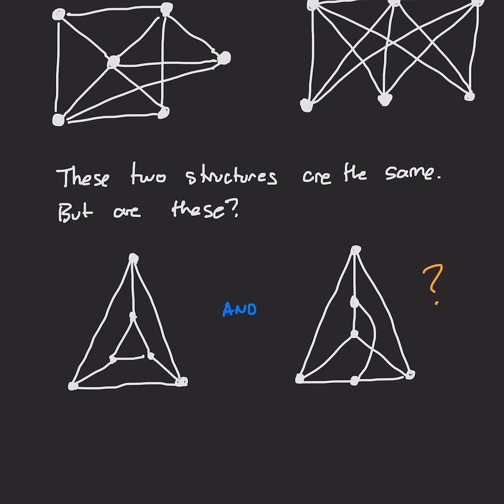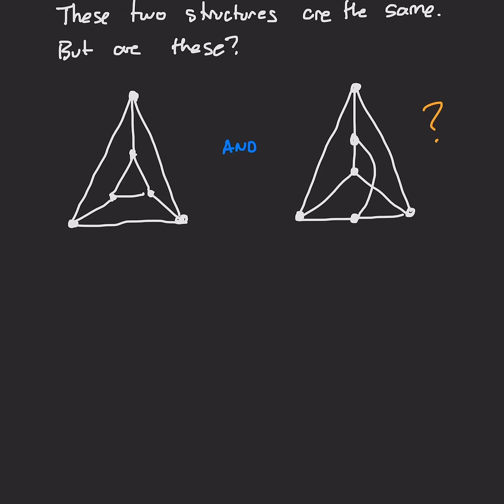Upon closer inspection, we see that actually they're the same number of points, and each point has the same number of lines attached to them. So maybe they actually are the same. But it's not obvious one way or another. So how can we test?